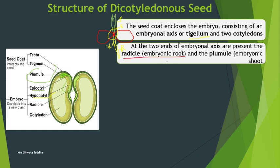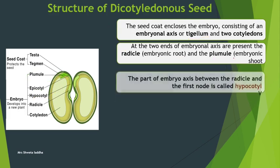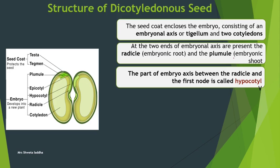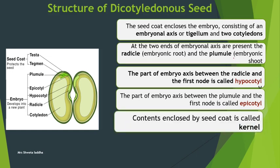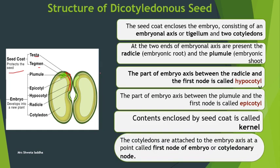The radicle is going to form the root system and the plumule is going to form the shoot system. The contents enclosed by the seed coat are called the kernel. Inside the seed coat you can see the outer testa, inner tegmen, the two cotyledons, and the embryonic axis with epicotyl, plumule, hypocotyl, and radicle. The cotyledons are attached to the embryonic axis at a point called the first node, also called the cotyledonary node.